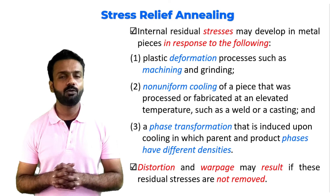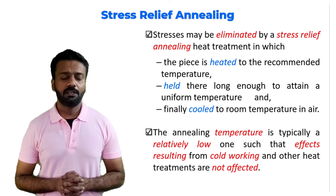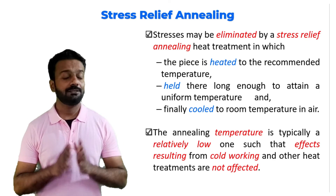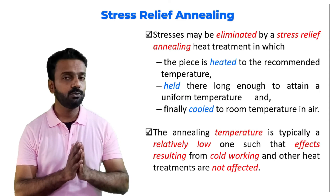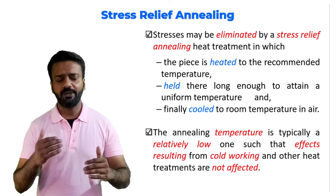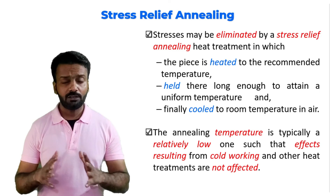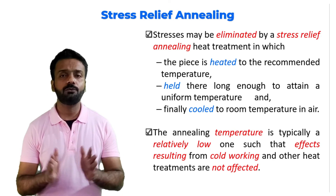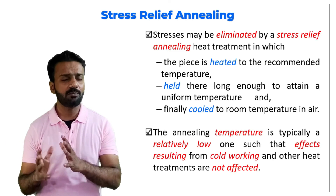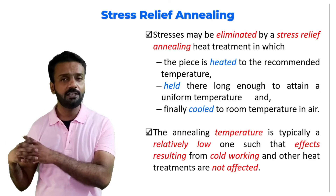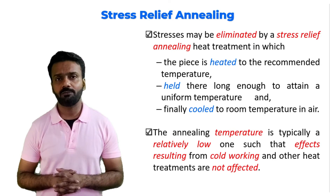The material might develop a lot of warpage and may crack. The temperature range of stress relief annealing is very low — only up to the recovery temperature. Most effects like cold working are not affected. We heat to a very low temperature, hold at that temperature for some time so that the internal stresses are relieved, and then cool the material to room temperature.